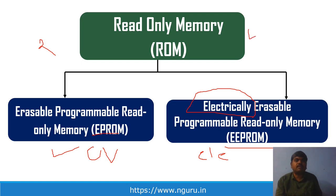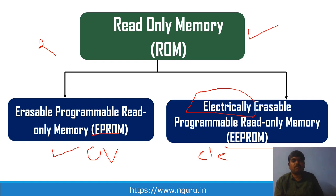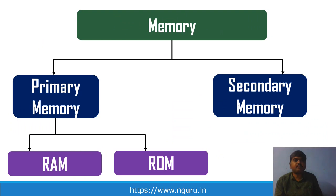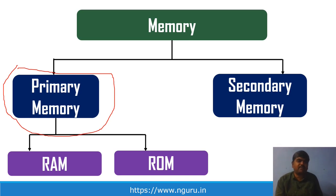To summarize primary memory: we have completed primary memory, which is of two types — Random Access Memory and Read-Only Memory. RAM is further classified into SRAM and DRAM. ROM is also classified into two types: EPROM and EEPROM. Now comes secondary memory.